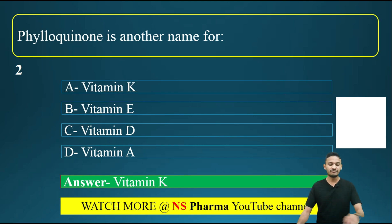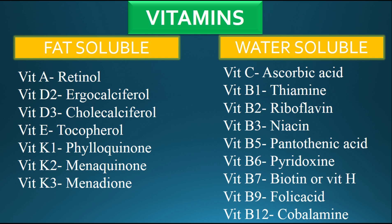Vitamin K is also known as phylloquinone. Specifically, vitamin K1 is phylloquinone, vitamin K2 is menaquinone, and vitamin K3 is menadione. As for the other options: vitamin E is known as tocopherol, vitamin D is calciferol, and vitamin A is retinol. These are the different names of the different vitamins.